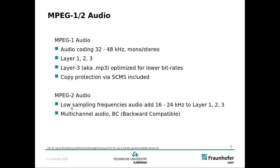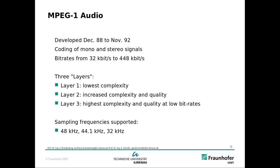MPEG-2 audio includes more lower sampling rates at 16 to 24 kilohertz in addition to what layers 1, 2, and 3 can do. It also adds multi-channel audio in a backward compatible way, so MPEG-2 audio is targeted for lower bit rates. MPEG-1 was developed from 1988 to 1992 for bit rates from 32 kilobits per second to 448 kilobits per second. The sampling frequencies supported are 48, 44.1, and 32 kilohertz.